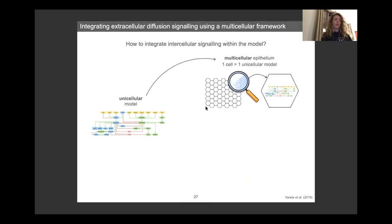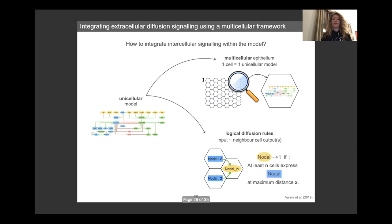So going further into the model, we wanted to jump from unicellular to multicellular framework in order to be able to simulate in a single goal the whole epithelium of the embryo instead of simulating one territory at a time. And to do so, we used an Epilog tool by which we built an epithelium, a 2D epithelium, where one cell corresponds to a single instance of our unicellular model.